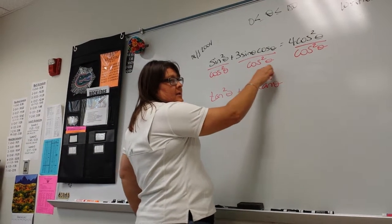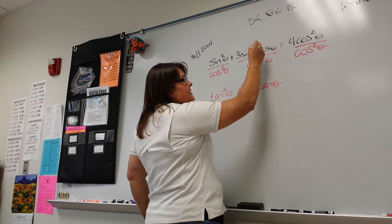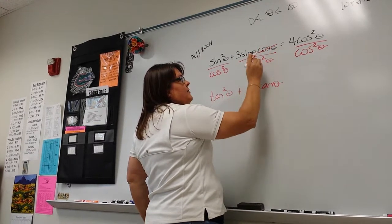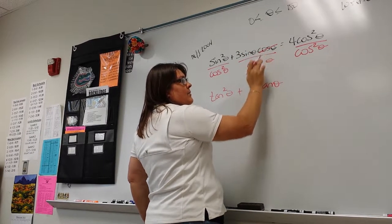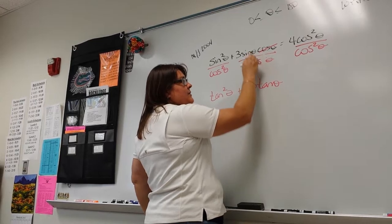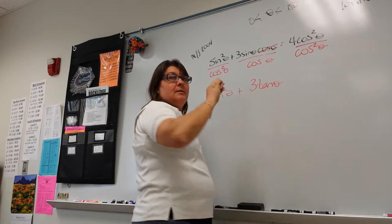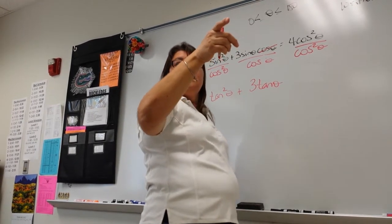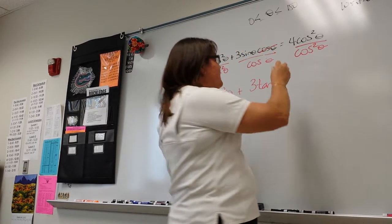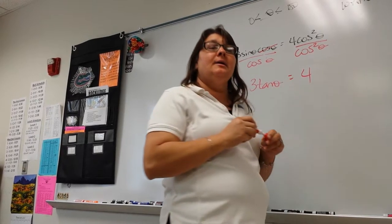If you think of it this way: one of the cosines can go away with one of the cosines, so what I'm left with is sine over cosine. And then it equals four.